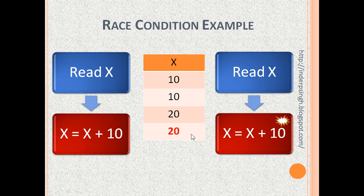which is incorrect because two processes have been executed and both should have increased x by 10. So, initial value of x was 10 and now it should be 30, but we are getting the end result as 20, which is incorrect. This is an example of a race condition.